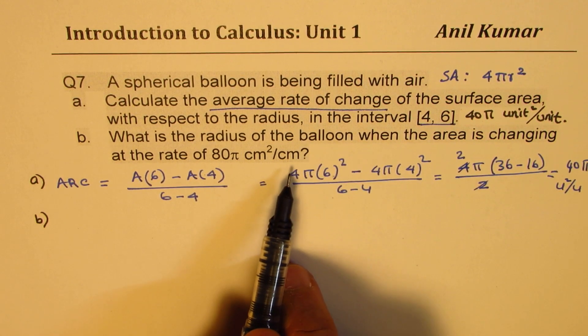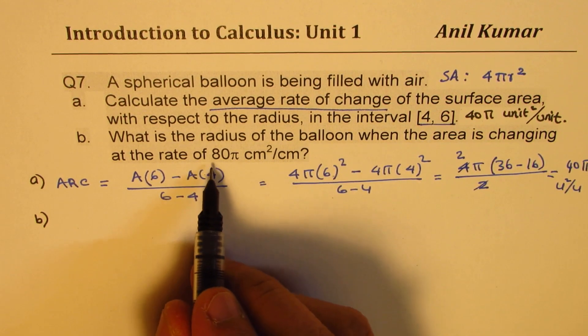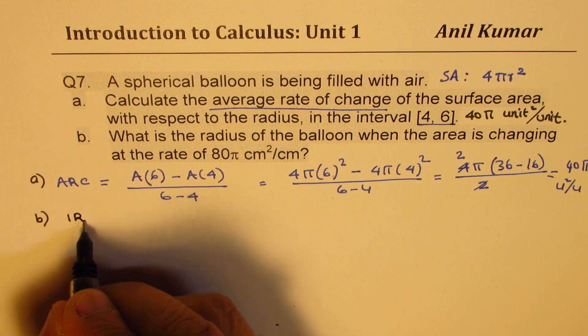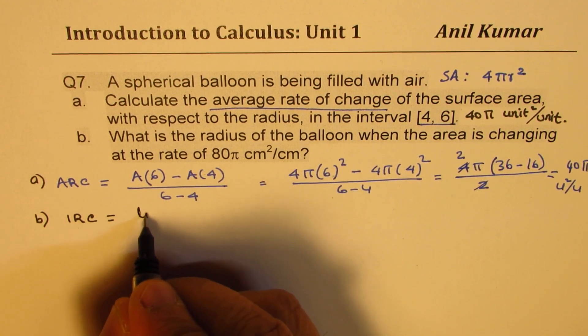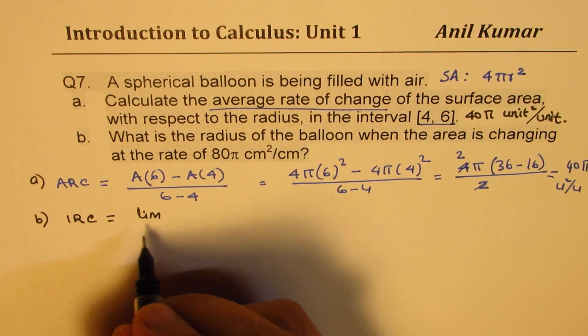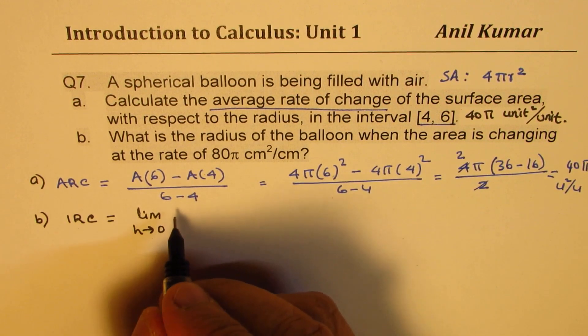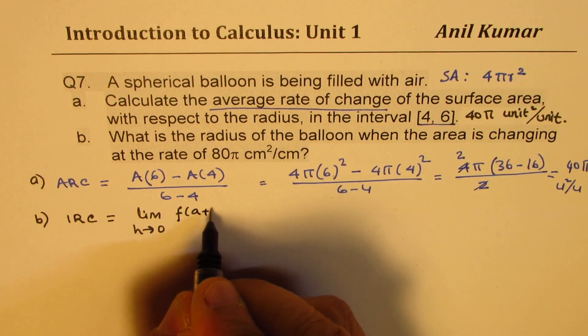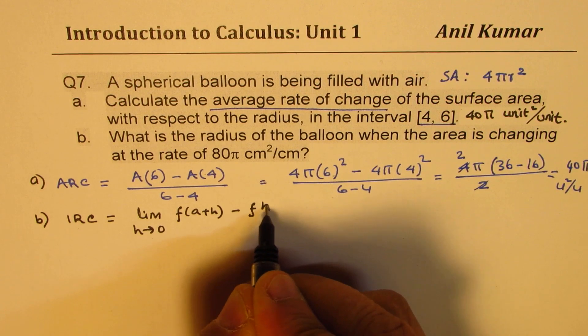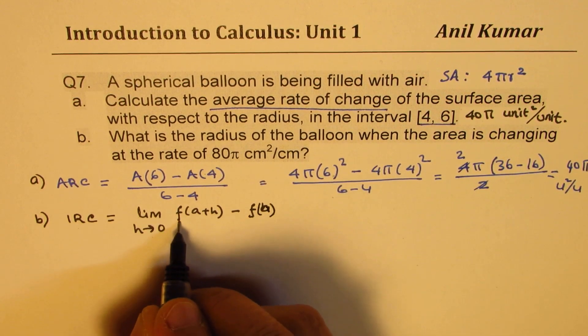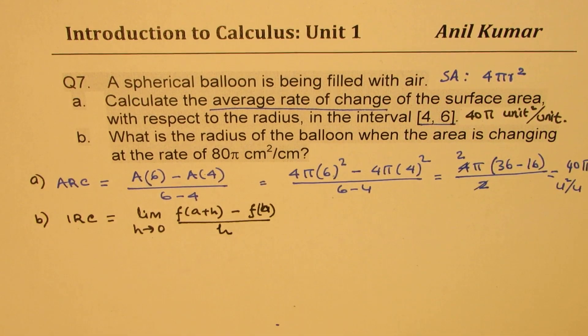So for instantaneous rate of change we know that the instantaneous rate of change is basically equal to limit when h approaches 0 for f(a+h) - f(a) divided by h. That is what instantaneous rate of change is.